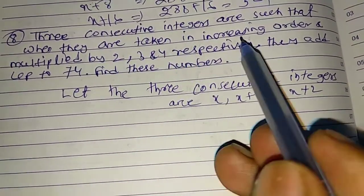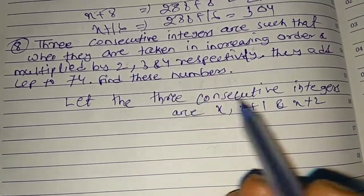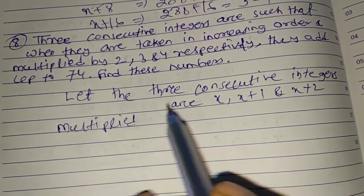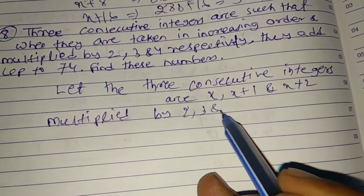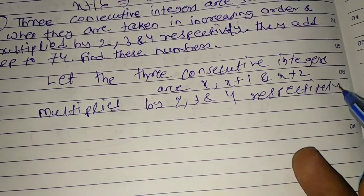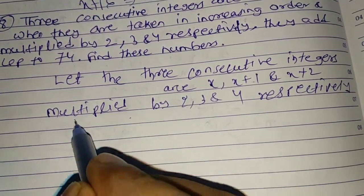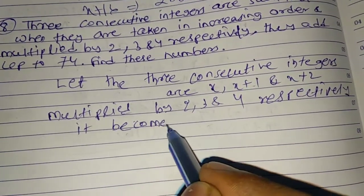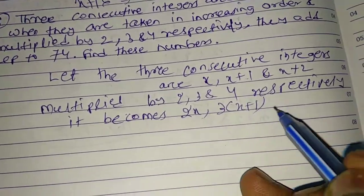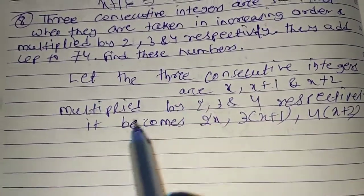When they are arranged in increasing order and multiplied by 2, 3, and 4 respectively, it becomes 2 into X, then 3 into X plus 1, then 4 into X plus 2. They add up to 74, so add these three numbers.